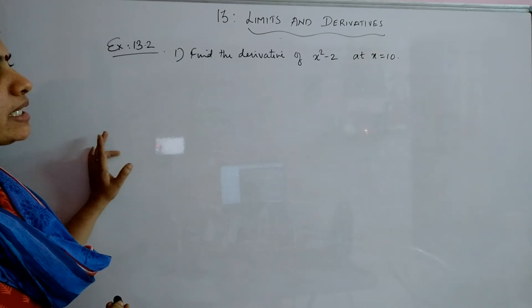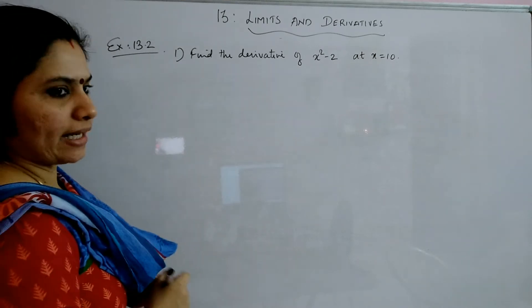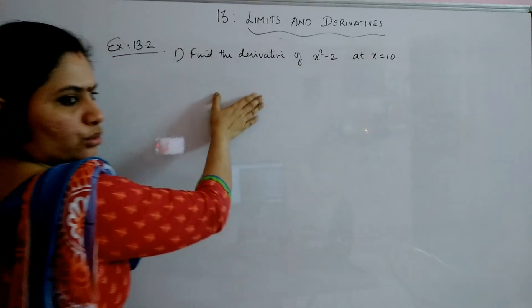Find the derivative of x square minus 2 at x equal to 10. Now, when the point is also given, how we will do the problem?